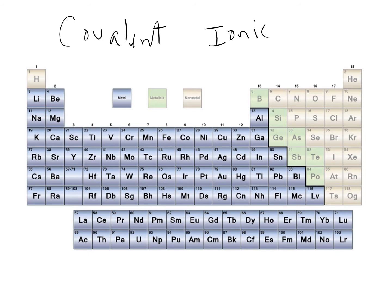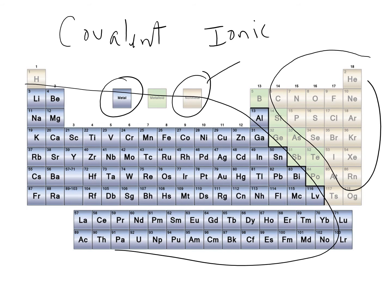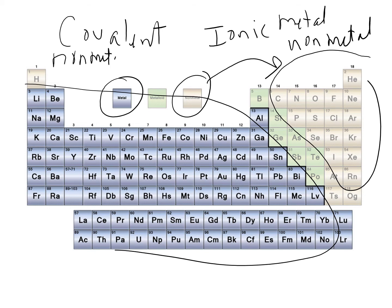Our periodic table tells us whether we have ionic or covalent. In purple, we have all of our metals, and in tan we have our non-metals. If we have an ionic compound, it's a metal bonded to a non-metal. Covalent is between non-metals and non-metals.